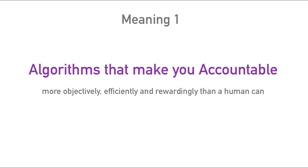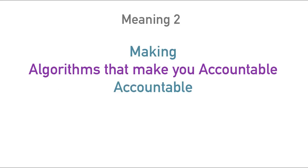Algorithmic accountability has at least two meanings. One is algorithms that make you accountable — using algorithms instead of human judgment because machines could be more objective, efficient, and consistent. That covers everything from are you creditworthy, are you worth hiring, are you at risk as a student, how are you doing in your studies. But the other important meaning is: how do we make those algorithms accountable? What does it mean to call an algorithm to account? Whose door are you going to knock on? What are you going to see when you ask to see the algorithm? Will you even understand what you're looking at?